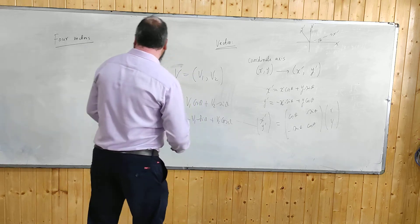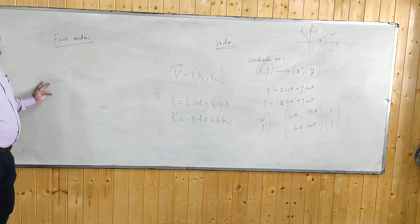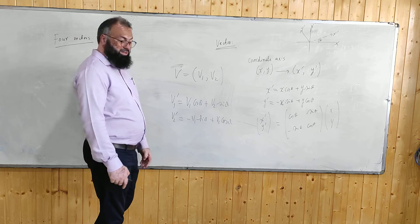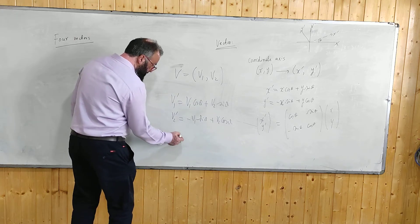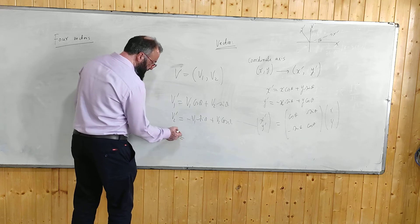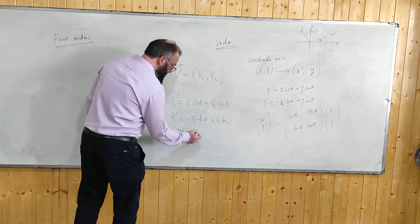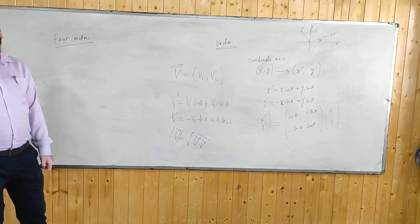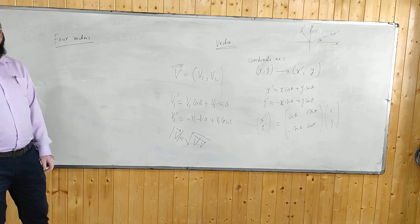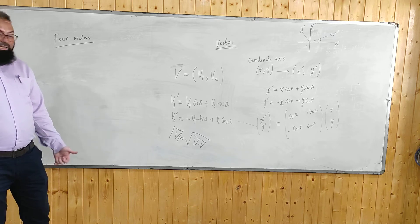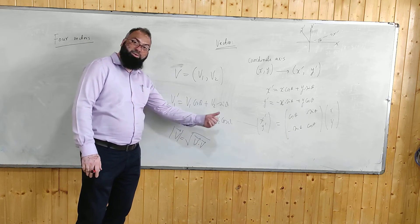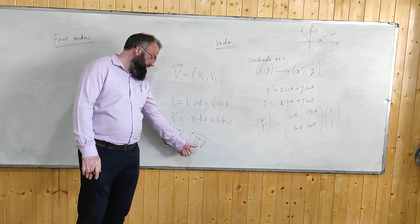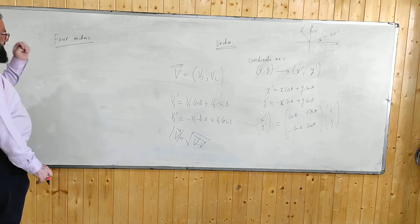Now let us define the four-vector. You can now define the rule to figure out the length of a vector. The length V is defined as the square root of V dot V. This is how we define the length of the vector — by defining an additional property called the dot product. If you are not able to define the dot product on your given space, then you are not able to define the length of the vector.